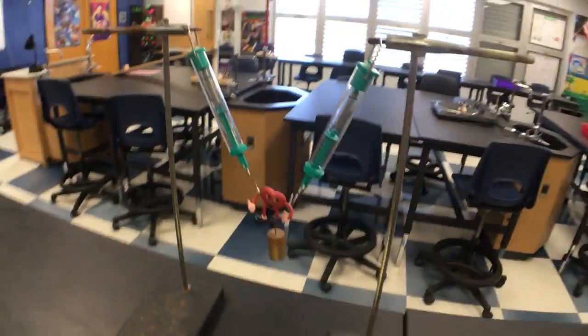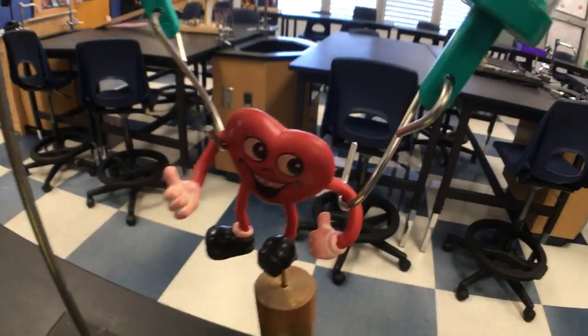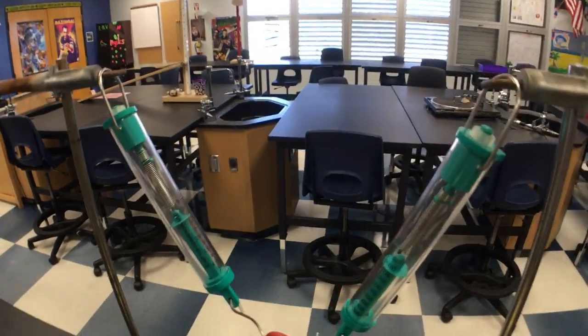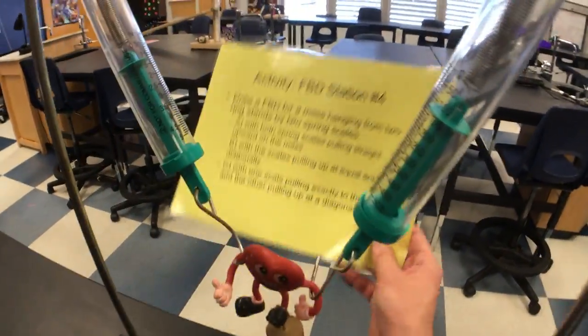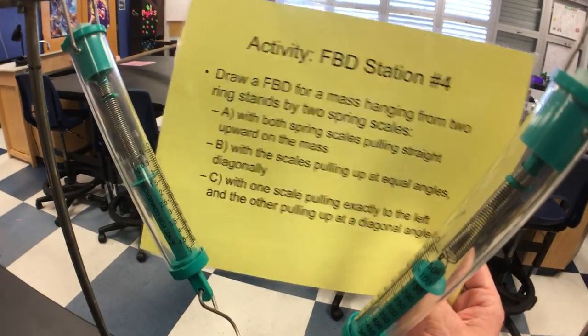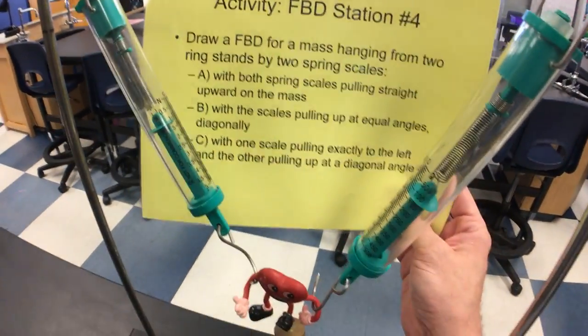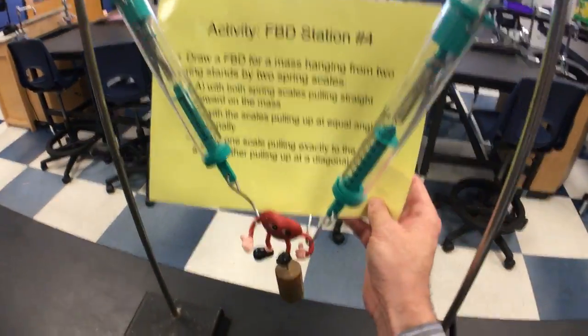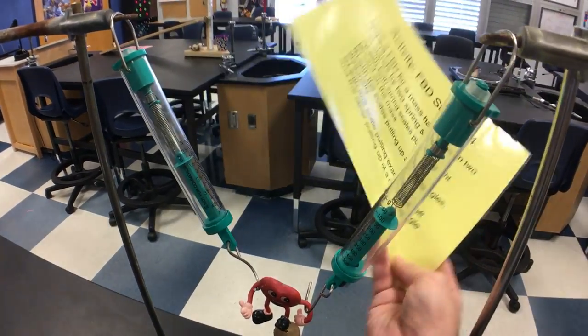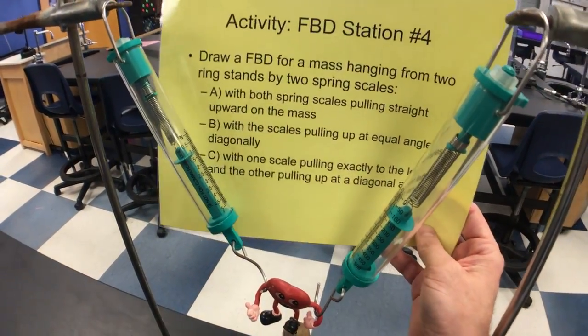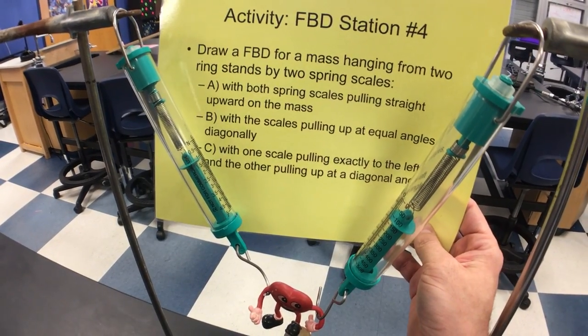Let's look at another station over here. What's up, heart man? He's giving us the thumbs up. He's hanging here on two spring scales with a little added mass down there. Activity station number four: draw a free body diagram for a mass hanging from two ring stands by two spring scales. A, with both spring scales pulling straight upward on the mass.